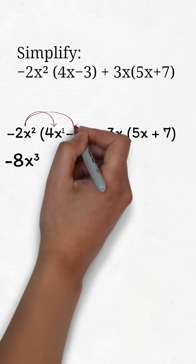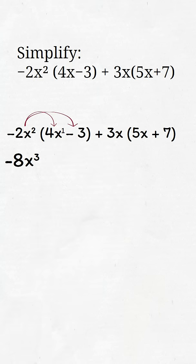Then we multiply the negative 2x squared by the minus 3. Negative 2 times minus 3 is positive 6. Then we can bring our x squared.